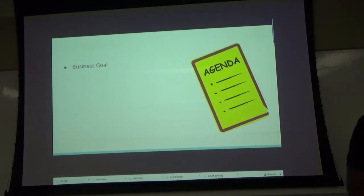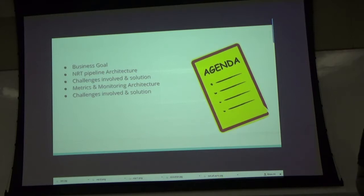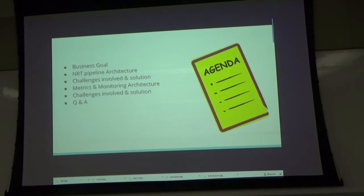So what is the agenda? First I will cover the business goal, then we'll talk about the architecture, then what challenges we encountered and how we dealt with them. I will also talk about the metrics and monitoring architecture and some challenges there. I'm not capturing all the challenges we faced — primarily for time — if I wanted to cover all of them, I'd probably need 4-5 hours. So I've picked the most critical challenges. At the end there will be Q&A, but feel free to ask questions anytime.